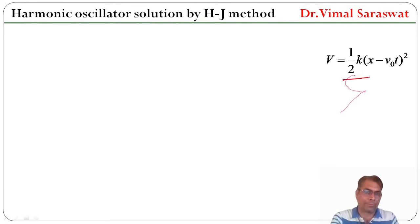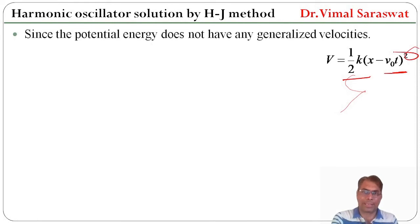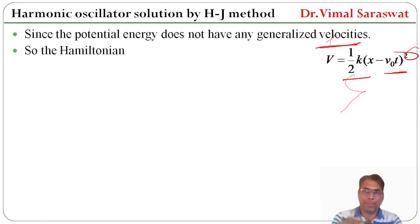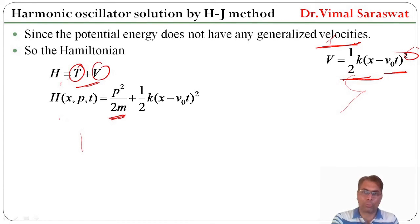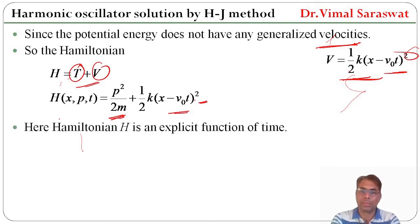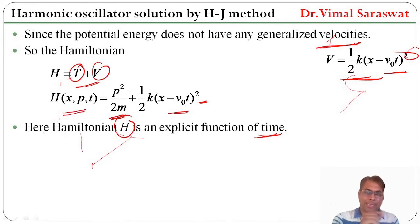Since V equals half k times (x minus v₀t) squared, and the potential energy does not have any generalized velocities, the Hamiltonian H equals T plus V. The kinetic energy is p squared over 2m, so H equals p squared over 2m plus half k times (x minus v₀t) squared. Here the Hamiltonian H is an explicit function of time.